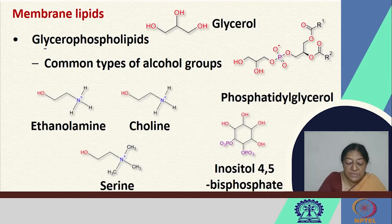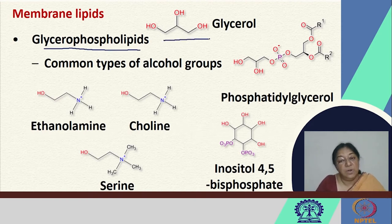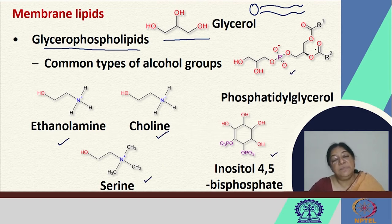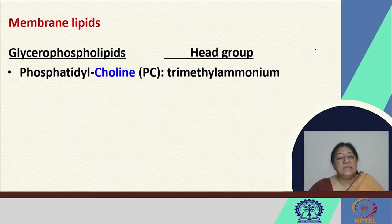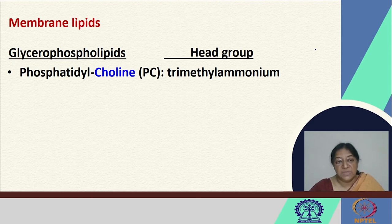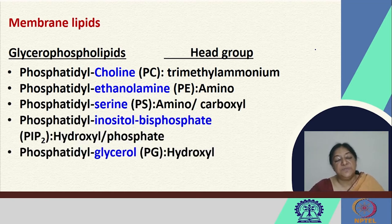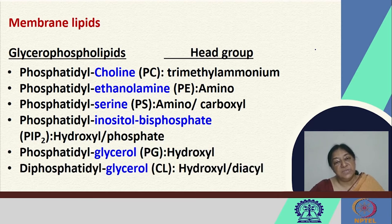Looking at the membrane lipids in glycerophospholipids derived from glycerol, we have the polar head and two tails. The polar head group comprises specific types of polarities that give these lipids their properties. When we look at glycerophospholipids named according to the alcohol they are derived from, they include phosphatidylcholine, phosphatidylethanolamine, phosphatidylserine, inositol bisphosphate, glycerol, and diphosphatidylglycerol. These different head groups and different tails give them distinct and important properties.